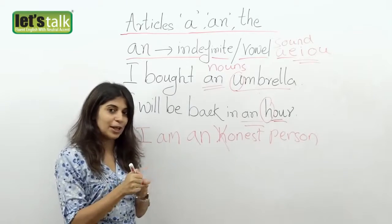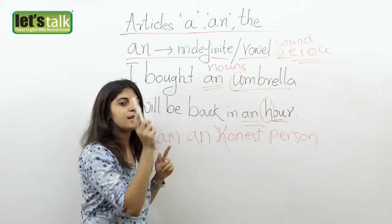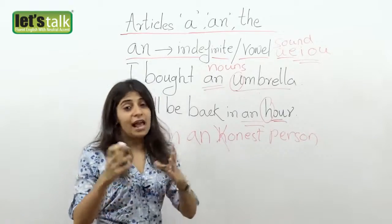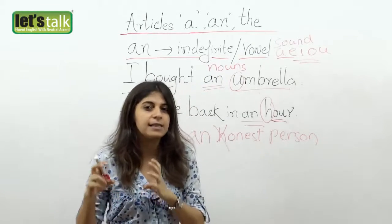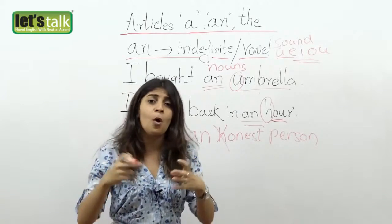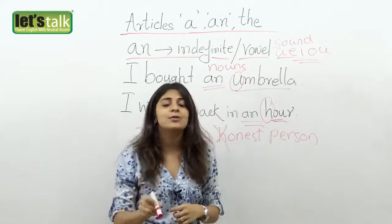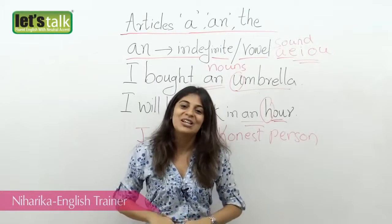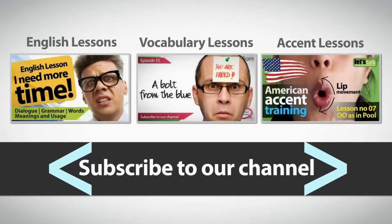So I hope you now have a clear picture of when to use 'a,' when to use 'the,' and when to use 'an' — the simpler one used before vowels or vowel sounds. As I mentioned, there are many, many rules when using articles, and I will get into more detail in our next lessons, including exceptions and all the rules. Please do subscribe to our channel, and if you have any questions, do write in to us. Till then, take care and have a great day. Thank you.